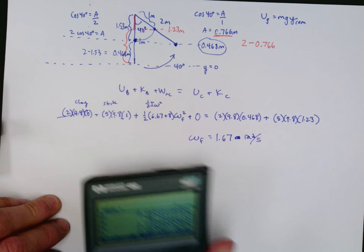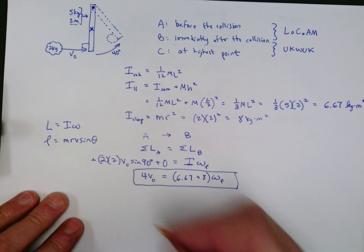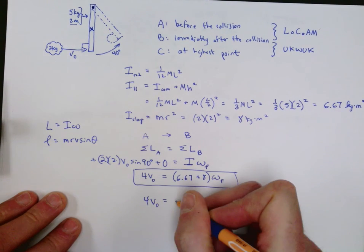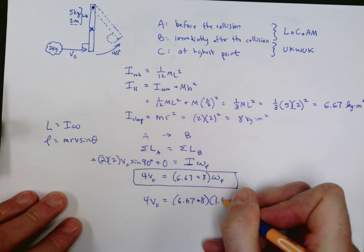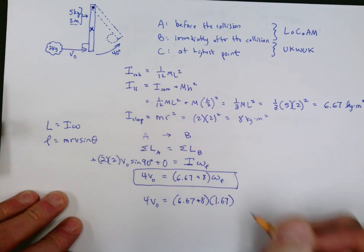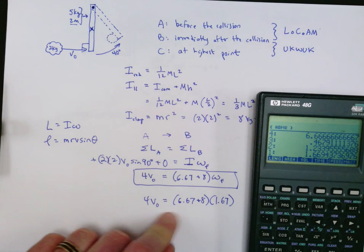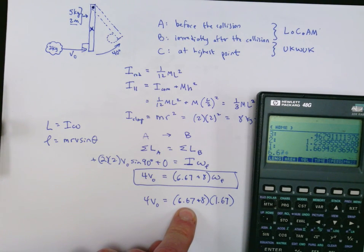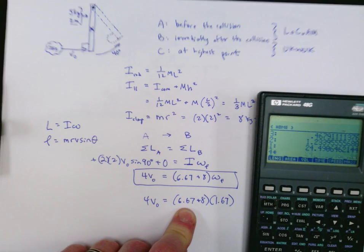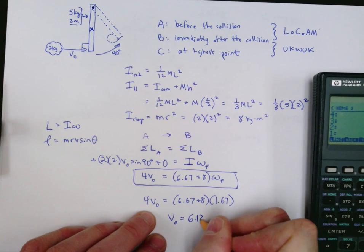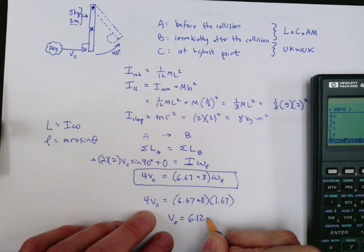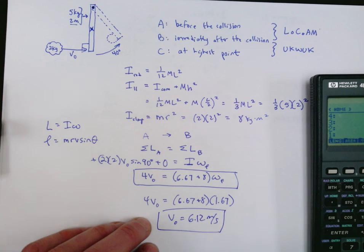Taking ω_f = 1.67 rad/s back to the angular momentum equation: 4v₀ = (6.67 + 8)(1.67). So v₀ = (14.67 × 1.67) / 4 ≈ 6.12 meters per second. That is the initial velocity of the wad of clay before the collision.